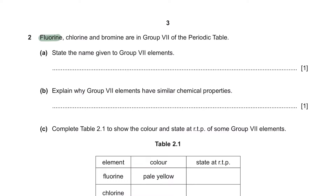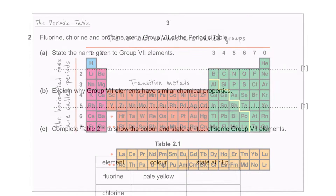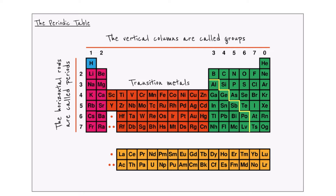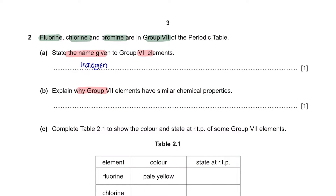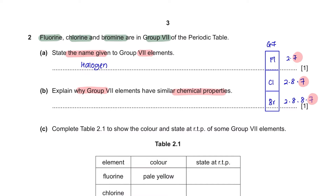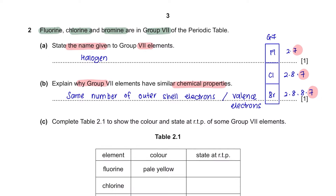Question 2: Fluorine, chlorine, and bromine are in Group 7 of the periodic table. Question A: State the name given to Group 7 elements. The vertical columns are called groups, and Group 7 elements are identified as halogens. Question B: Explain why Group 7 elements have similar chemical properties. All elements in Group 7 have the same number of valence electrons, which is 7. Therefore, this is the reason why they have similar chemical properties.